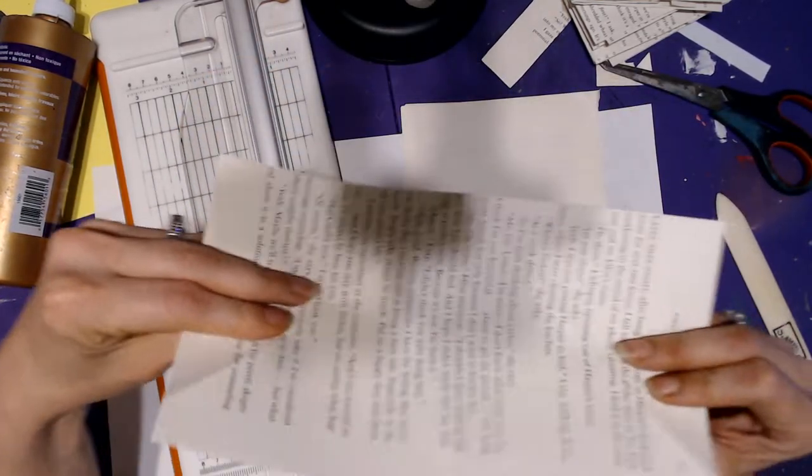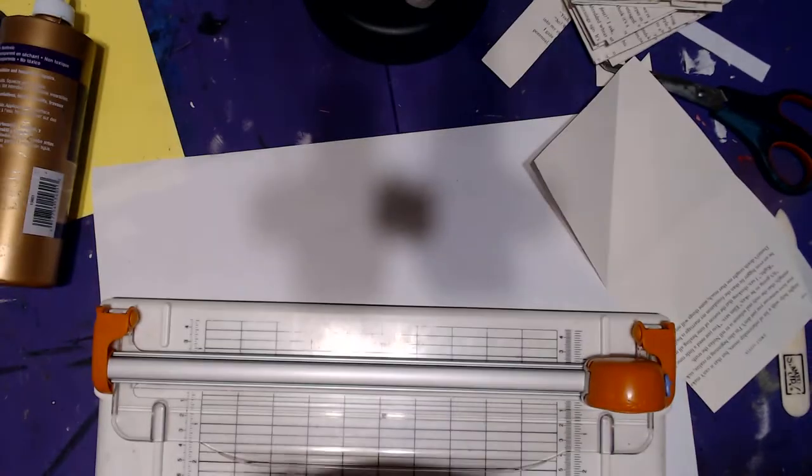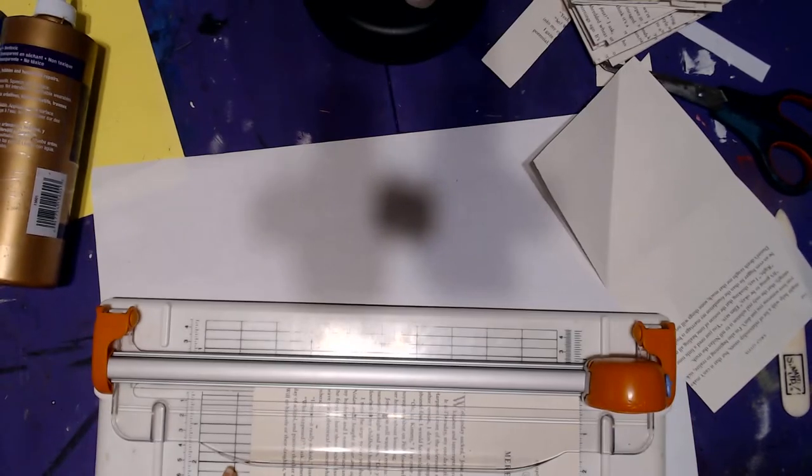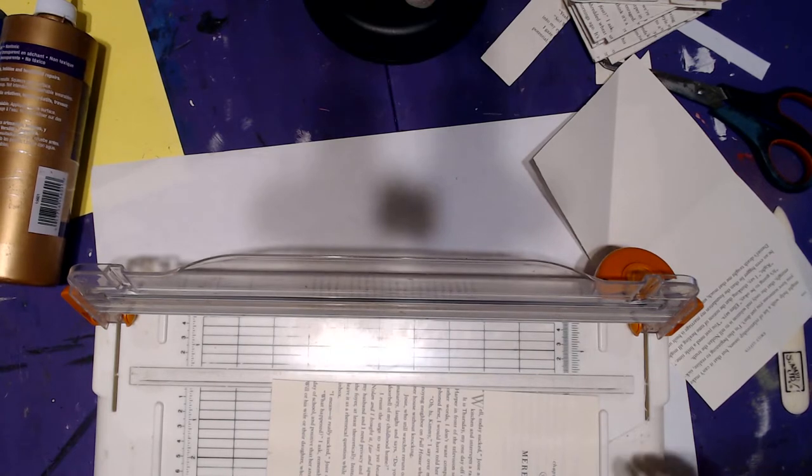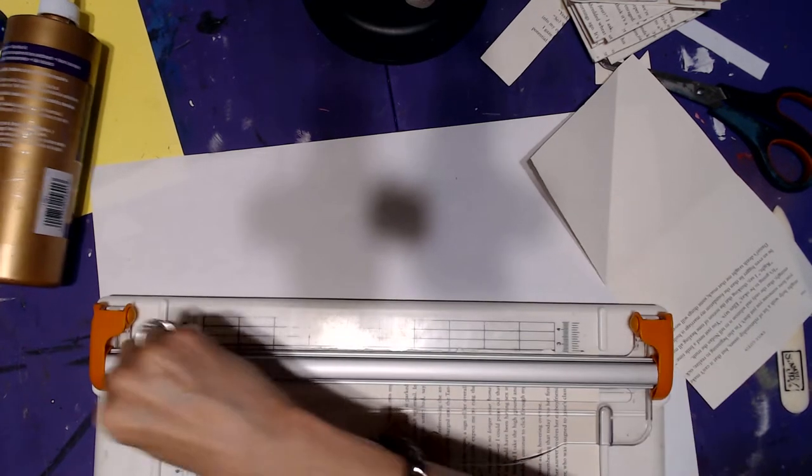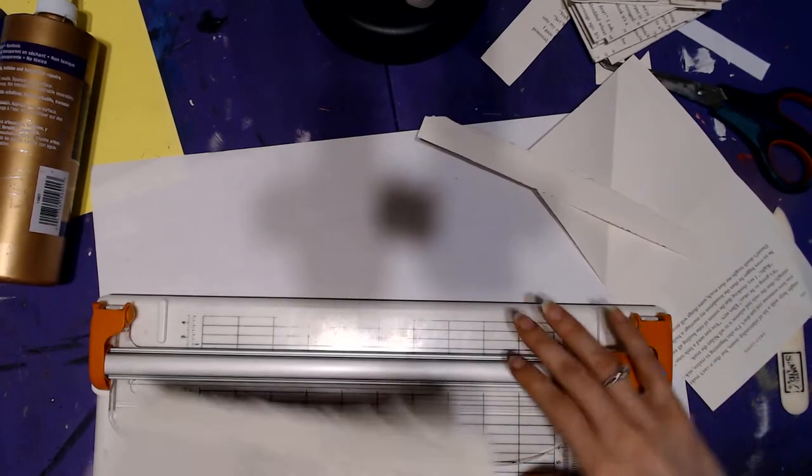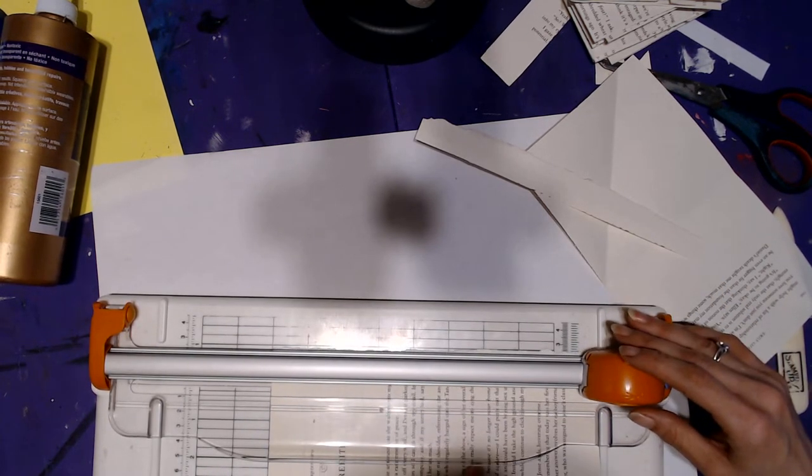Now what you're going to need are just book pages, paper you pull out of a book that you're not using, simple, easy. Now what you're going to do is take these and trim the edges off. See right here where the lines are? You're going to trim that off. You can get as close as you can to the edge or the margin of your book pages. If you don't have a paper trimmer, a pair of scissors works.